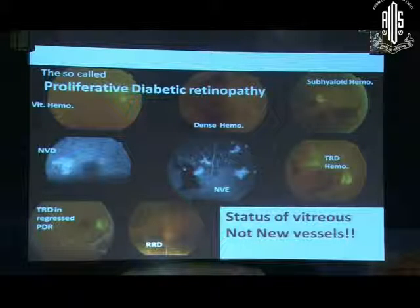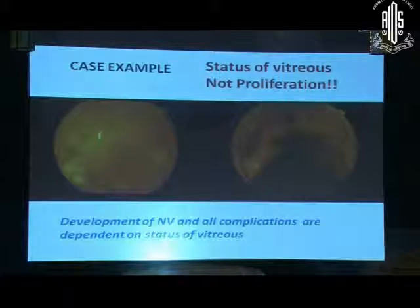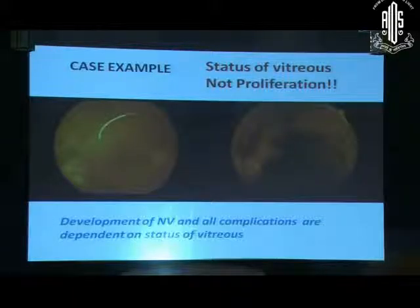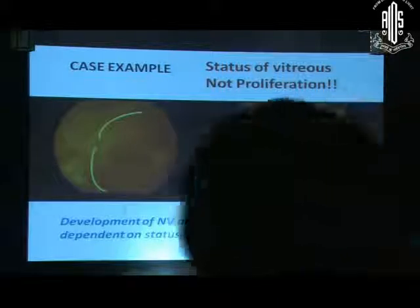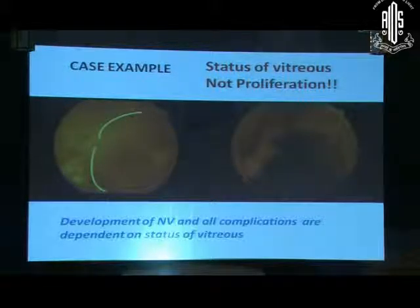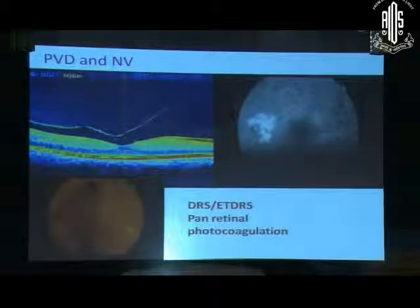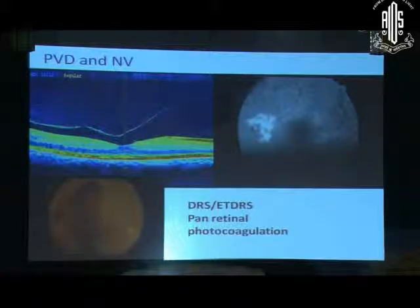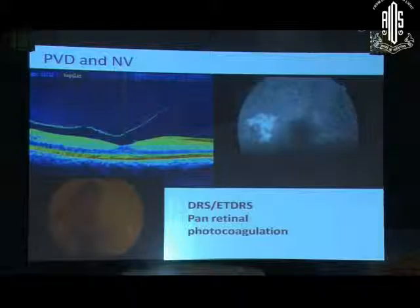If you look at all these pictures, it is the status of the vitreous which governs the outcome and not the new vessels. To give a case example: the right eye of this patient got a PVD in the early part of the disease and the clean macula has been maintained for several years without additional treatment, while the left eye of the same patient presents as a huge sub-hyaloid bleed.